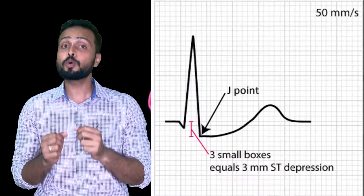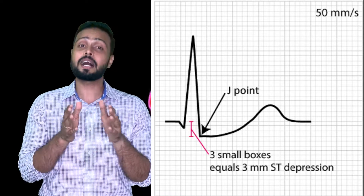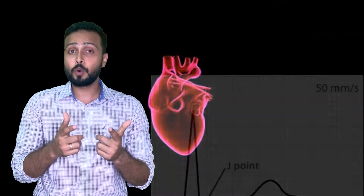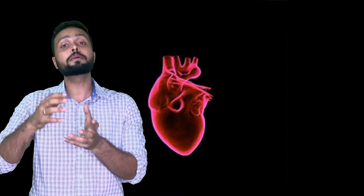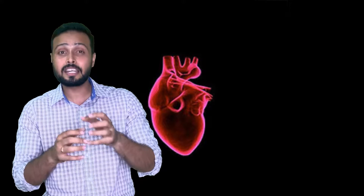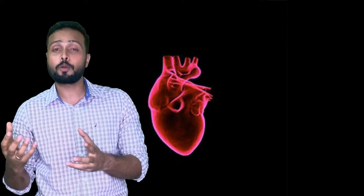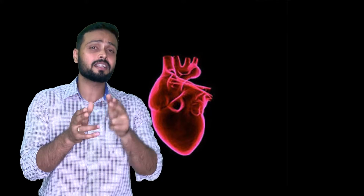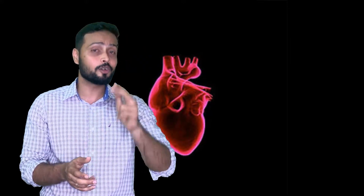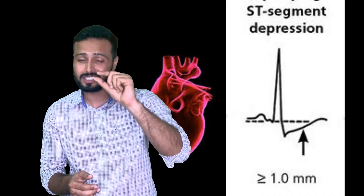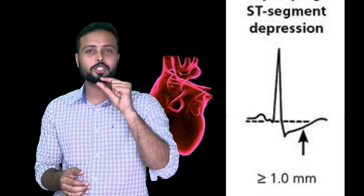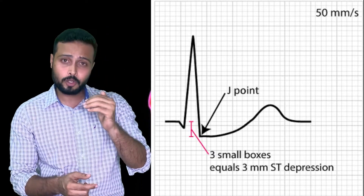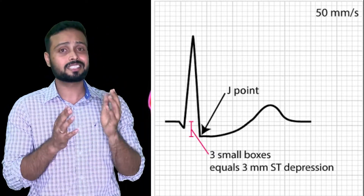Now let's talk about the ST segment. If the ST segment depresses more than 2 mm, it is high risk. The ST segment signifies the beginning of repolarization, so if it depresses, repolarization is not occurring properly. To identify whether it goes beyond 2 mm, you calculate the small boxes — one small box equals 1 mm — so if more than 2 small boxes show depression, it is considered high risk.